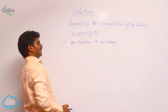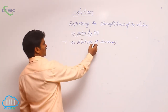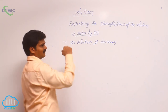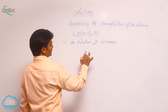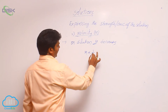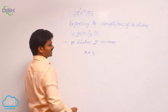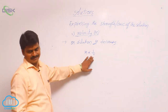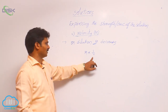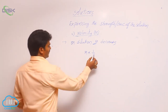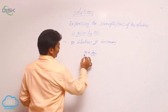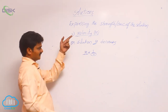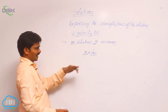Why does molarity decrease on dilution? In the standard formula, molarity and volume are inversely proportional — volume is in the denominator. So if volume is increased, molarity decreases. On dilution, volume increases, and that is why molarity decreases.